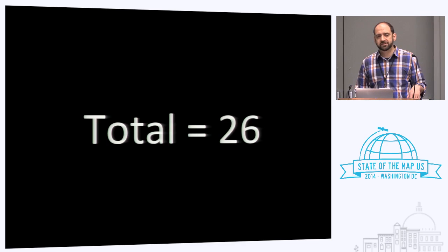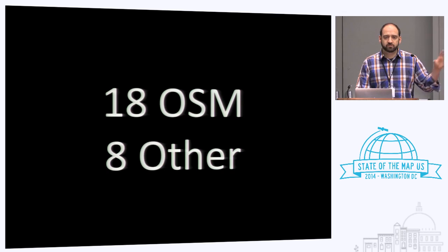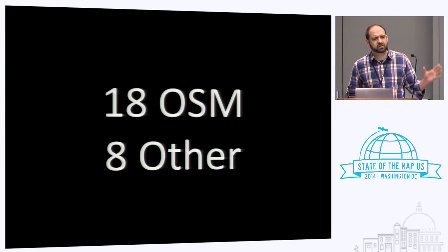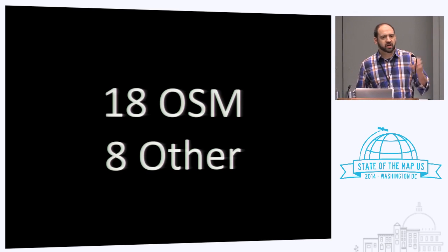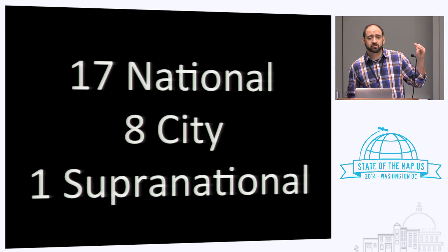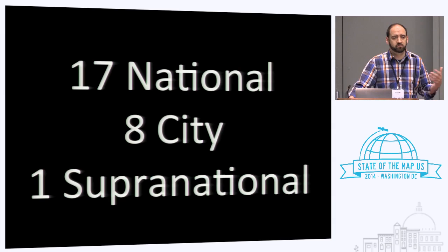So far we've collected 26 cases. Of them, 18 are related to OpenStreetMap; eight others are from other VGI projects — one on FixMyStreet, one on the California Roadkill Observation project, and one on lynx and bear tracking in Scandinavia. 18 of them are from developed countries and eight are from developing countries. We're looking to get that to a bit more parity as we better document some of our World Bank work. 17 are currently at the national level, eight at the city level, and one is supranational — the lynx and bear tracking project in Scandinavia.